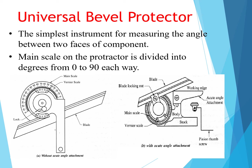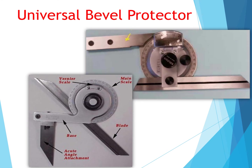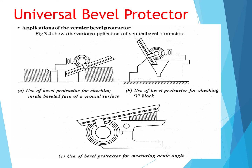The main scale of the protractor is divided into degrees from 0 to 90. The instrument has a main scale, vernier scale, base body, angle attachment, and blade. Its applications include measuring the bevel face of a ground surface, finding the V-angle, and measuring acute angles using the universal bevel protractor.